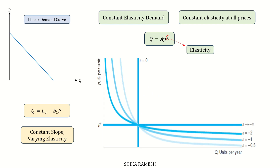The figure shows several constant elasticity demand curves with varying elasticities. The two extreme cases are the vertical demand curve with zero elasticity and the horizontal demand curve with elasticity equaling infinity.